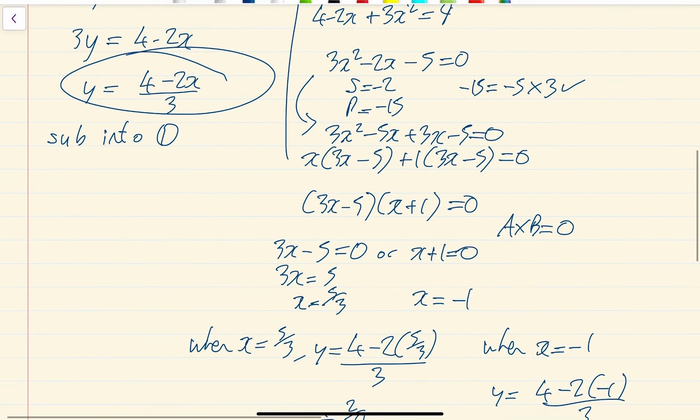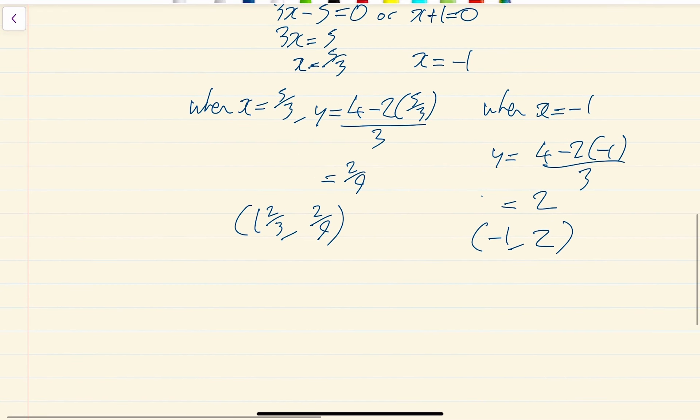So determine the coordinates of the points A and B. So I'll just answer that. Your answer, A would be minus 1, 2. And B would be 1 and 2 thirds, 2 ninths.